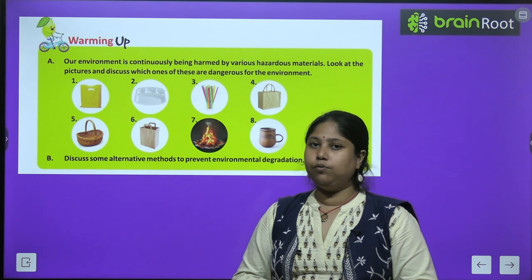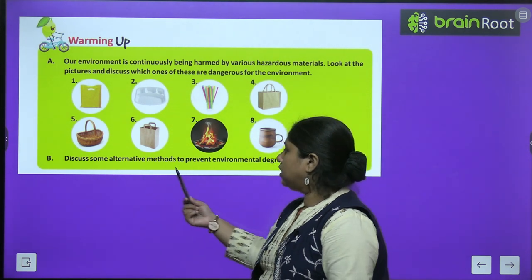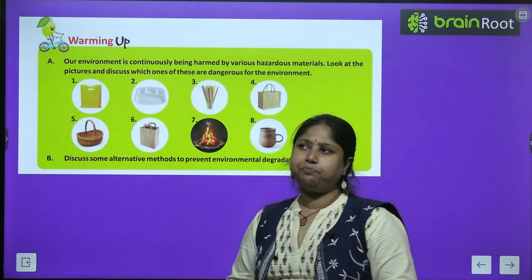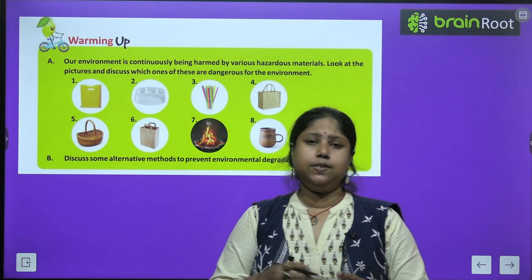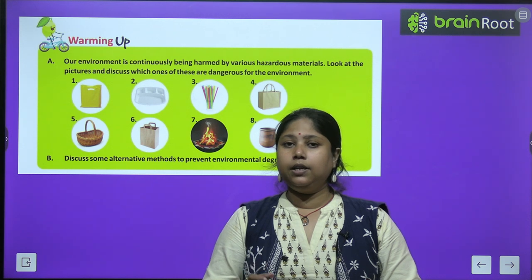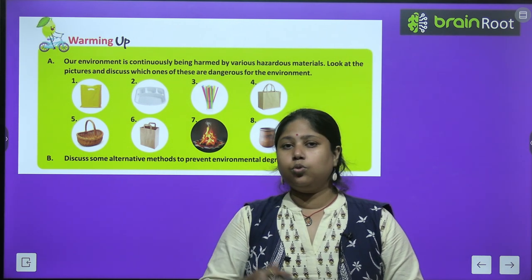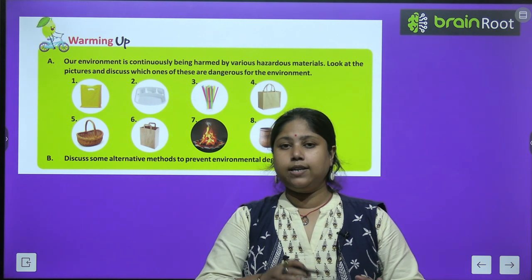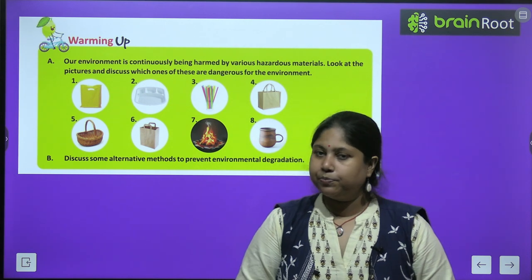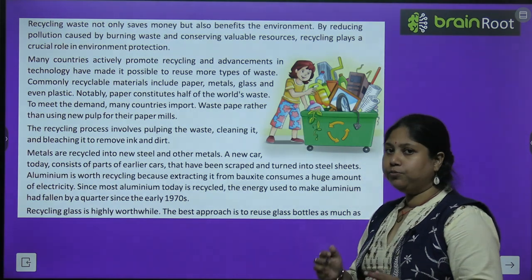Now discuss some alternative methods to prevent environmental degradation. हमें कुछ ऐसे methods suggest करने हैं जिनसे हम environmental degradation को रोक सकें — यानि हमारी प्रकृति और आसपास की जगह को नुकसान होने से बचा सकें। तो सोचिए और class में discuss कीजिए। आगे बढ़ते हैं — let's start with the chapter.